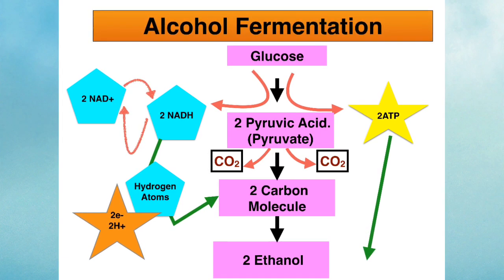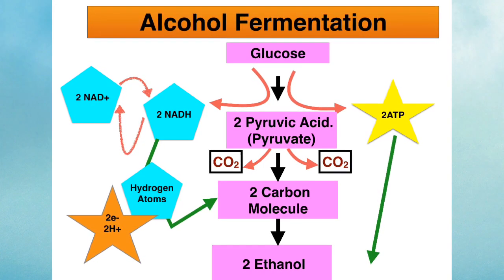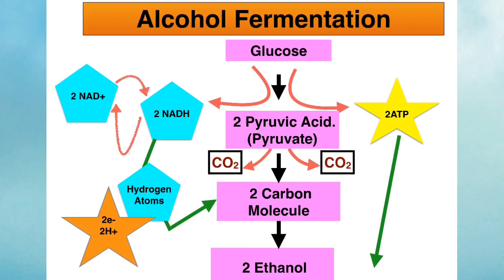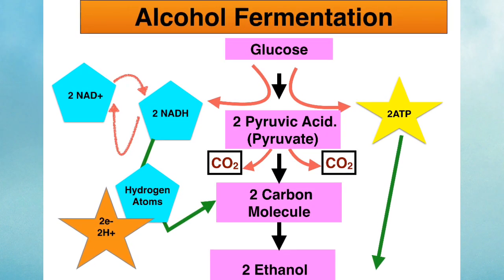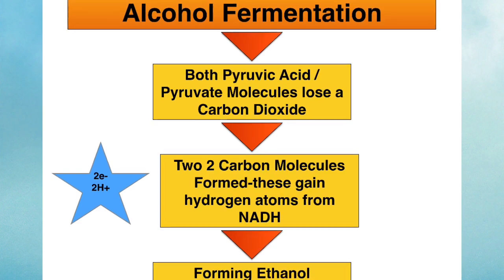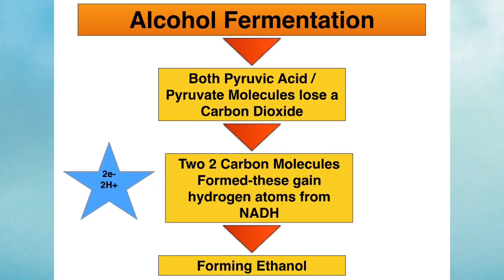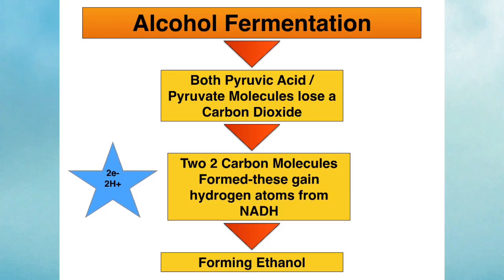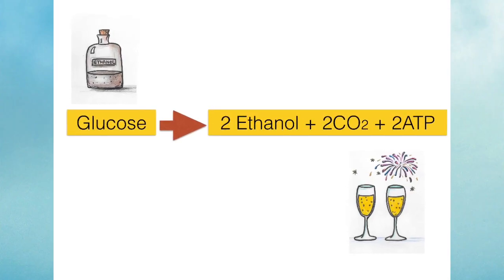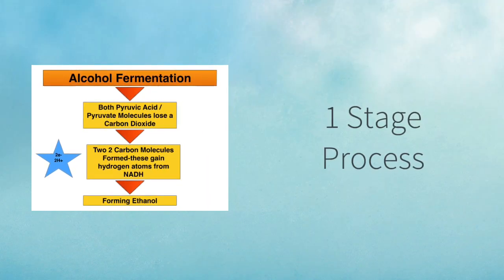In alcohol fermentation, the two pyruvic acid molecules each lose a carbon dioxide. You remember that the pyruvates were three carbon molecules — they now form two new two-carbon molecules. These newly formed two-carbon molecules receive the hydrogen atoms from the NADHs, forming two molecules of ethanol. The great benefit is that NAD+ is regenerated. So now you know how glucose was converted to two ethanol molecules, where the two molecules of CO2 came from, and those two ATPs. Alcohol fermentation is also a one-stage process.